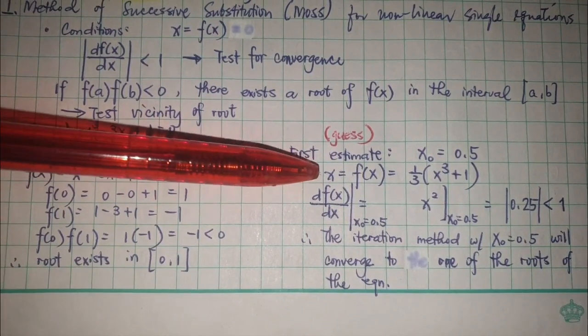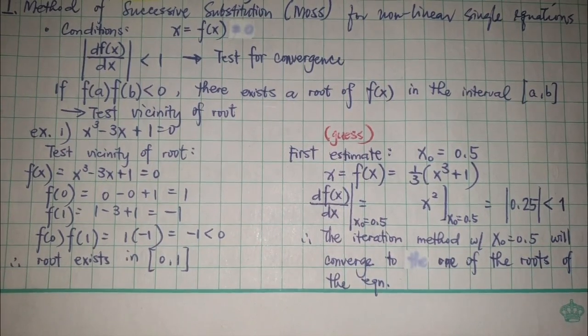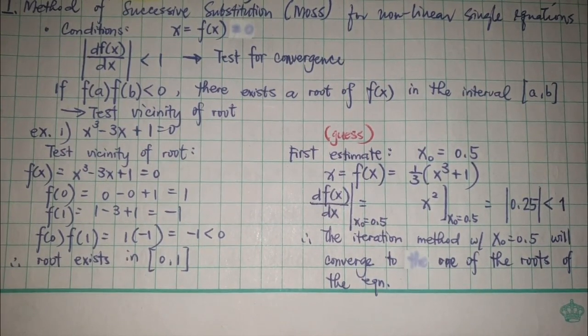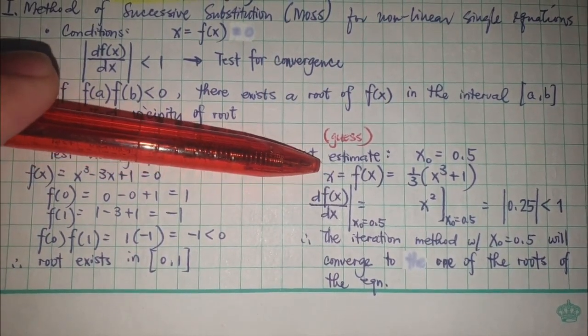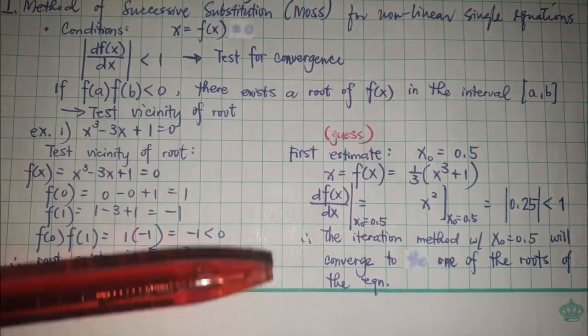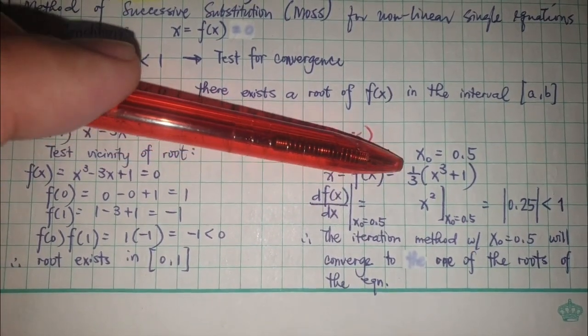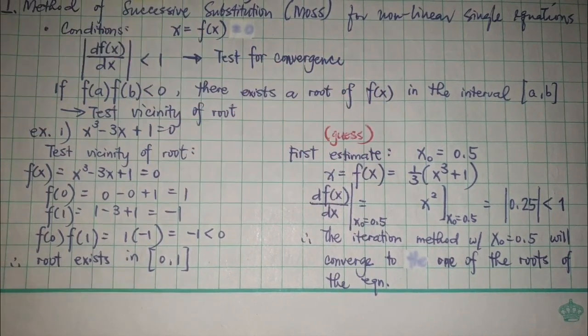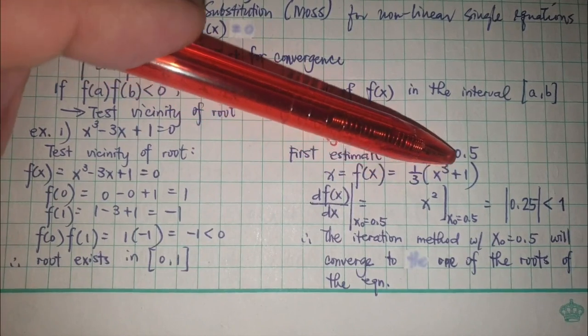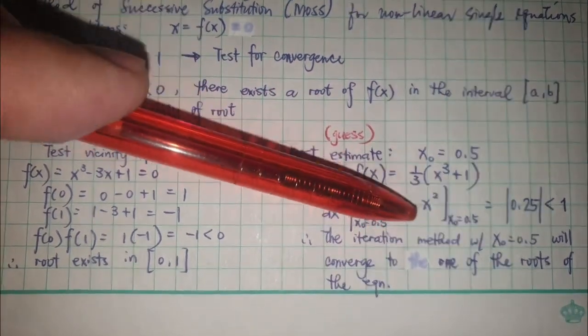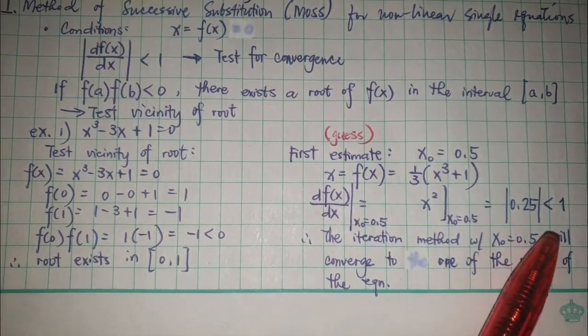Remember earlier I said isolate x such that you can solve for the next possible root. I isolated the linear x and got 1/3(x³ + 1). I would take the first derivative of this with respect to x and plug in the value that I had. After isolating it, it's going to give you 3x²/3, basically just x².